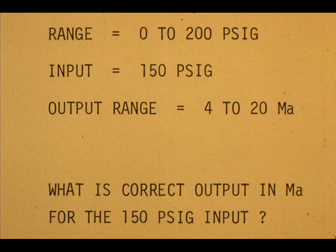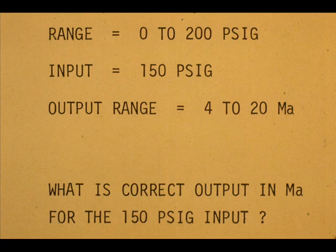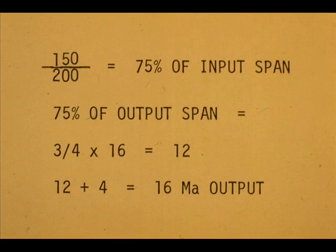By the same reasoning, the correct readout for 100 PSI input to the 0 to 200 PSIG transmitter is 12 milliamps. Here is a problem for you to work. Your answer should be 16 milliamps.